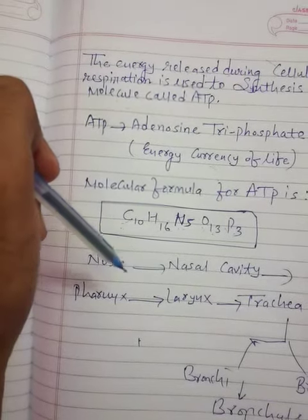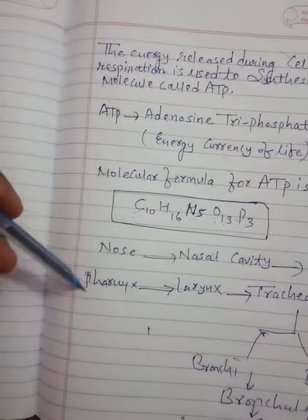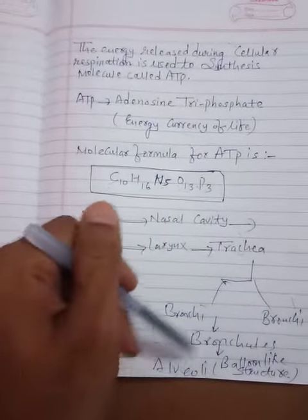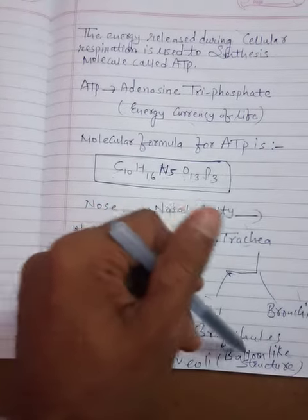Human respiratory system: nostril to nasal cavity, pharynx to larynx, larynx to trachea. Trachea will be divided into parts: bronchi to bronchioles, and at the base of bronchioles are alveoli, balloon-like structures.